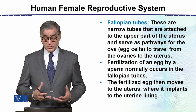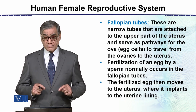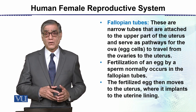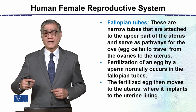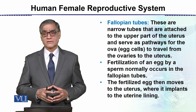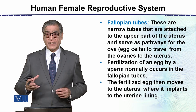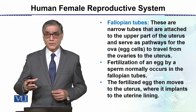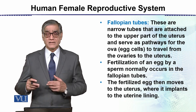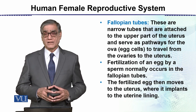The Fallopian tubes are very narrow tubes. One end is connected to the uterus, and the other end is open but surrounded by finger-like structures called the fimbria. Through the movement of the fimbria, the egg is brought into the Fallopian tube. This is in fact the part where fertilization of the egg occurs.